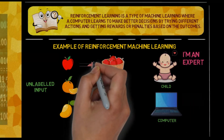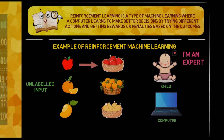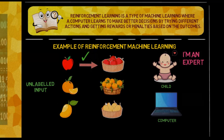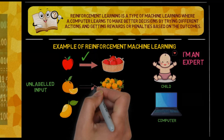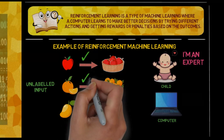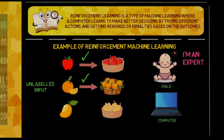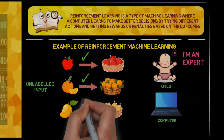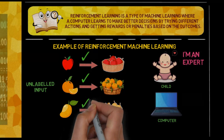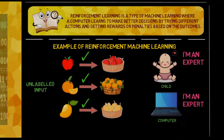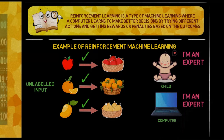Over time, the machine uses this feedback to learn which actions lead to positive rewards. It starts recognizing patterns like apples are generally round and red or green, mangoes are yellow, and oranges are round and orange. As the machine continues to sort more fruits and receive feedback, it improves its sorting strategy to maximize the rewards. Eventually, it becomes very good at sorting the fruits correctly based on their features.